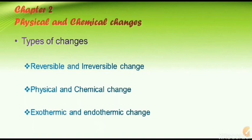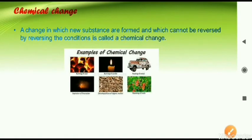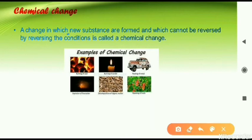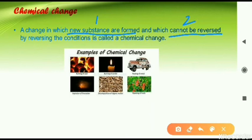Let us begin today's class. The first topic is chemical change. The definition: a change in which new substances are formed and which cannot be reversed. We can make two parts of this definition. First, new substances are formed — this is the first condition for a chemical change. Second, chemical changes cannot be reversed, meaning these are irreversible changes. If these two conditions are fulfilled, then that change can be called a chemical change.